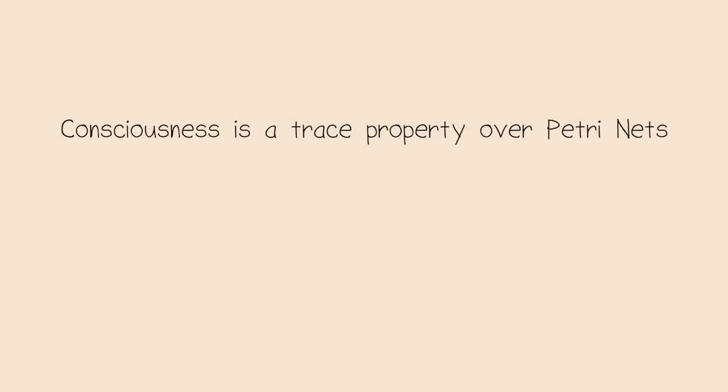Consciousness is a trace property over Petri nets. But in order to understand these words, I think it is easier to first understand the sentence, traffic lights are a trace property over automata. So, how do traffic lights work again?